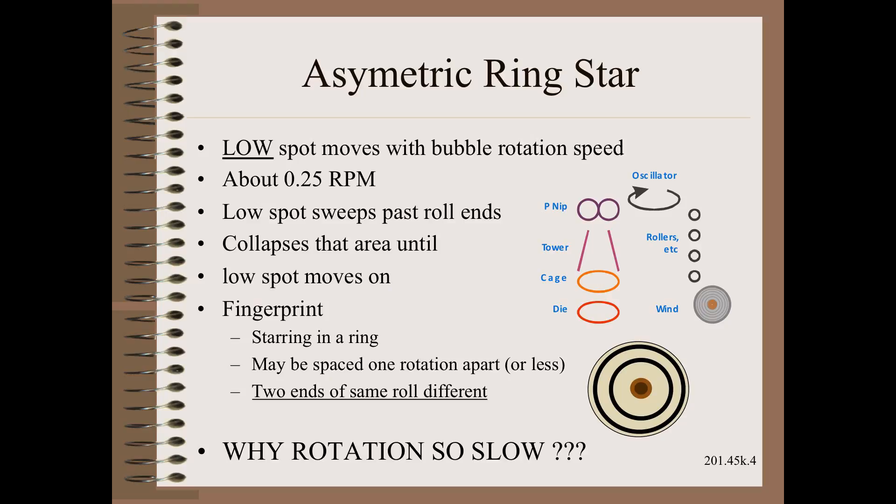Depending on a number of factors, such as the width and number of low spots and the width and diameter of the finished rolls, you may end up with a repeating pattern corresponding to the number of oscillations made during roll build. For typical packaging film rolls, this might be several rings. If the low spots are narrow enough, this defect might not occur. More importantly, if the oscillation rate is fast enough, the defect will also not occur.